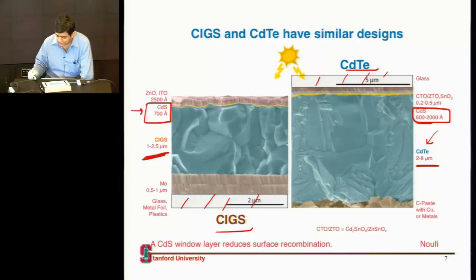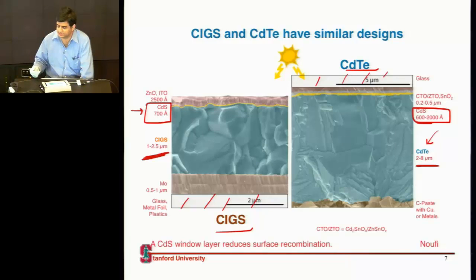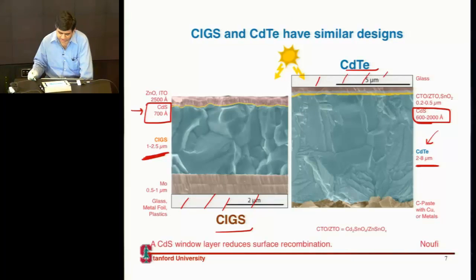Another thing is tellurium, as I mentioned last time, is a rare element, and there are concerns about whether there will be enough availability of it. So some of those concerns are also satisfied with CIGS.